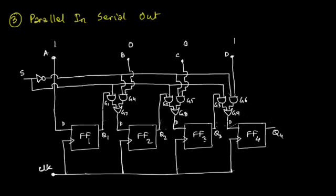Let's describe its operation in more detail. We have 4-bit data 1 0 0 1 as the parallel input. Whenever you provide a logic 0 input to line S, this logic 0 appears at the inputs of gates G1, G2, and G3. Since G1, G2, and G3 are all AND gates, if any one of their inputs is at logic 0, these gates are disabled.